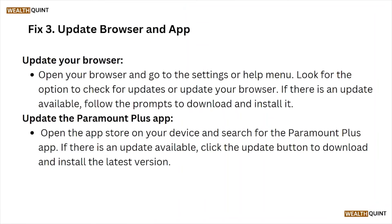Fix number three is to update the browser and app. Open your browser and go to Settings or Help, then look for the option to check for updates. If an update is available, follow the prompts to download and install it. To update the Paramount Plus app, open the app store on your device, search for the Paramount Plus app, and if an update is available, click the update button to download and install the latest version.